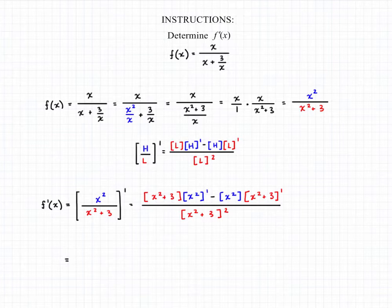And if we take care of our derivatives, we'll end up with x squared plus 3 times 2x minus x squared times 2x. This will all be over the quantity x squared plus 3 all squared.